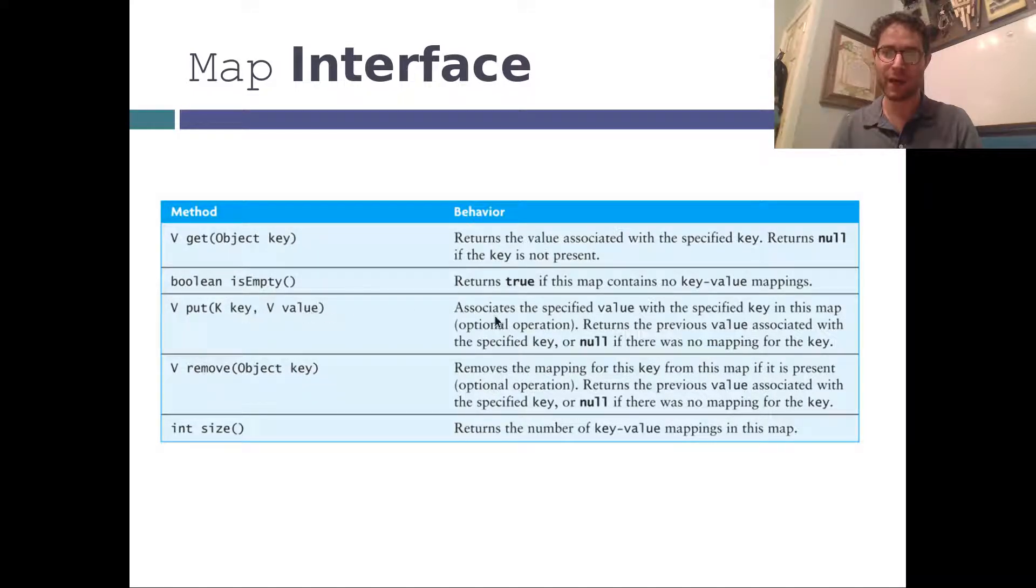Put. Put a key value pair into the data structure. Get. Given the key, give me the value associated with that key. So given your student ID, get all your information. Or when we're creating a new student, here's the student ID, here's the student information. And remove. Deleting something like that. If you delete your account, the email address is your key. Delete email address will basically remove that account information.